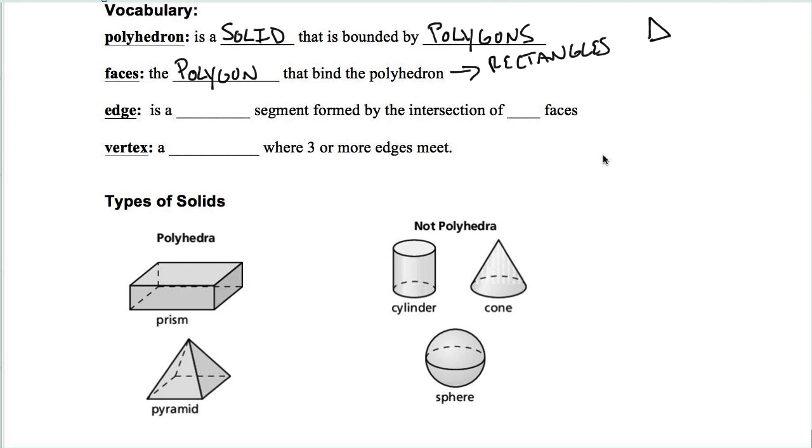An edge is just a line segment formed by the intersection of two faces. When you pick up a box of cereal, the sharp point at the end is going to be the vertex, but the long pieces of cardboard that you would fold on, that would be the edge.